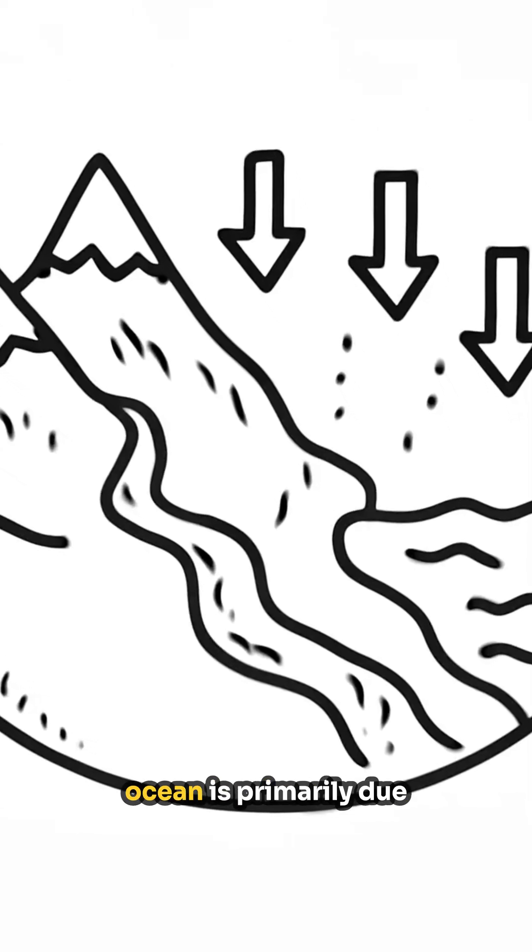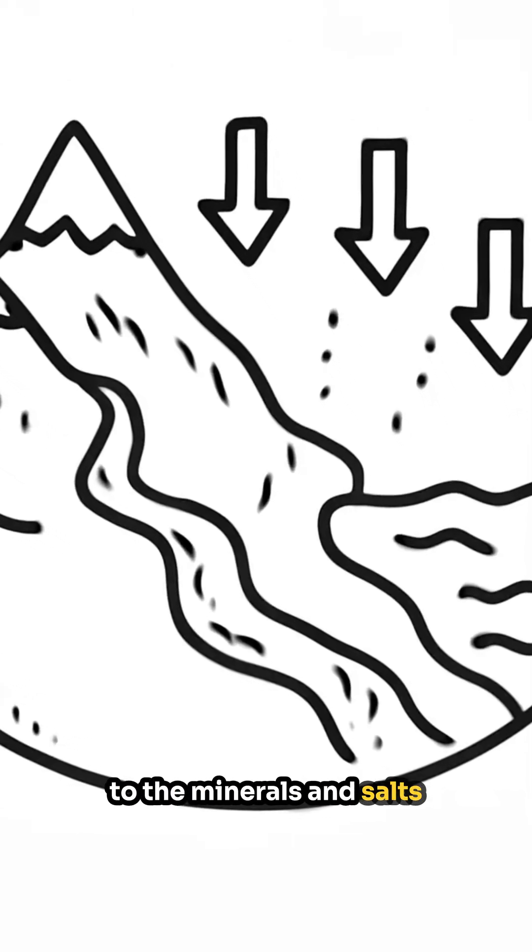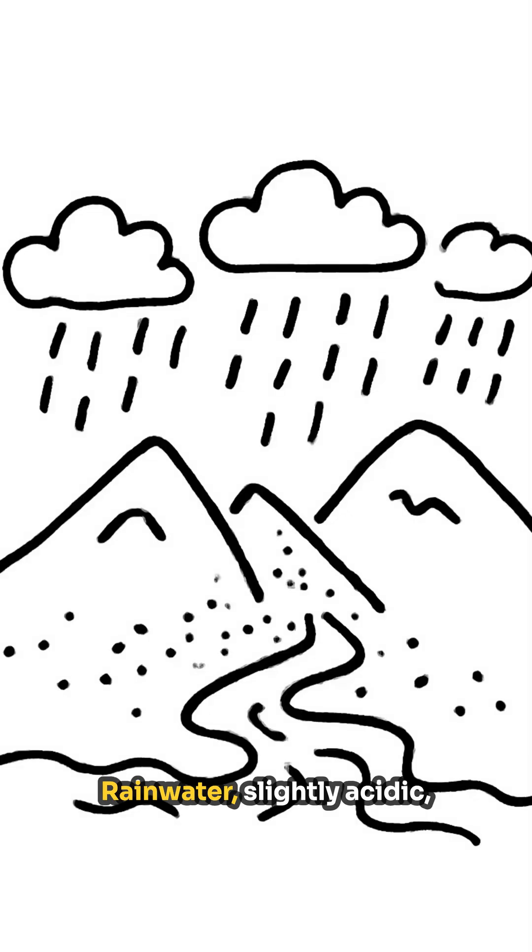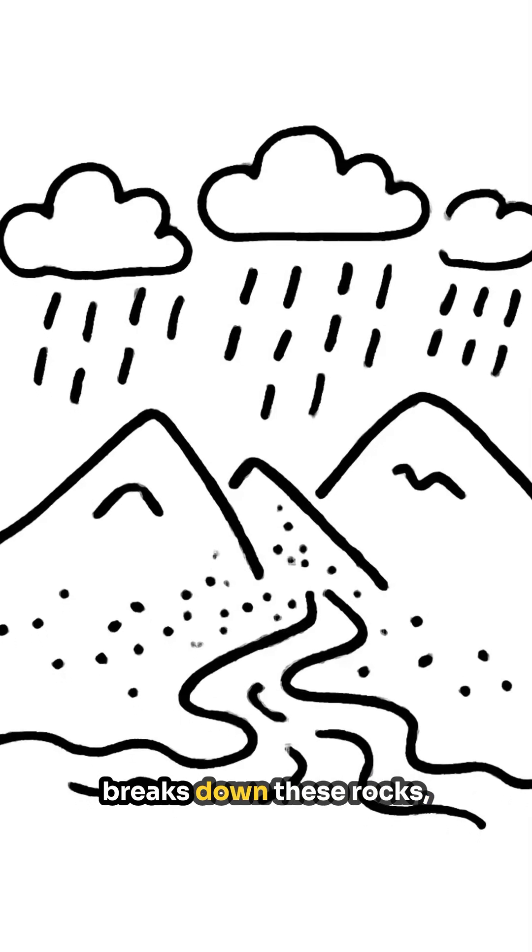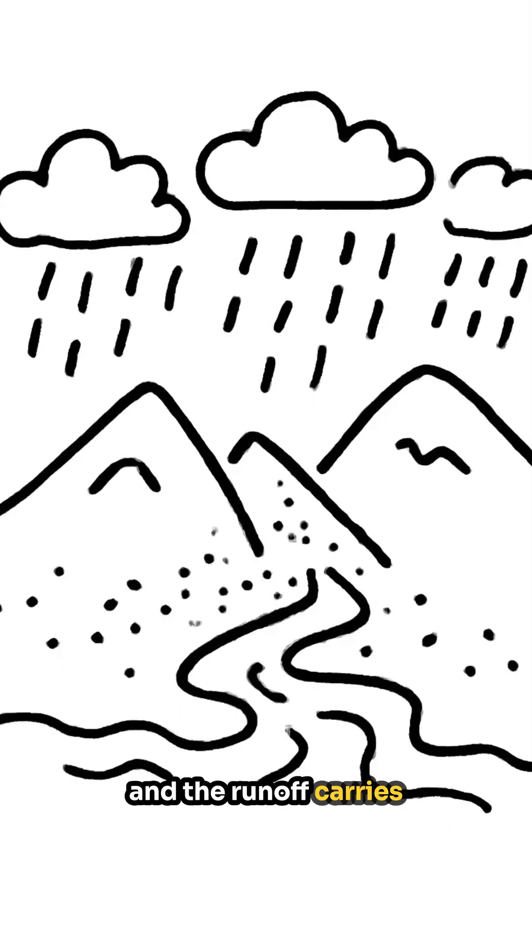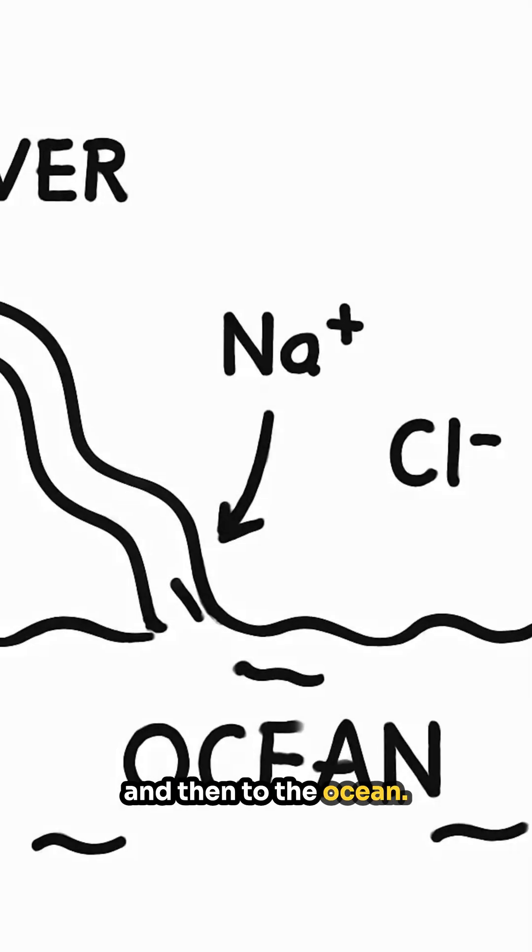The saltiness of the ocean is primarily due to the minerals and salts that are washed into the sea from rocks on land. Rainwater, slightly acidic, breaks down these rocks, and the runoff carries the dissolved salts and minerals into rivers and then to the ocean.